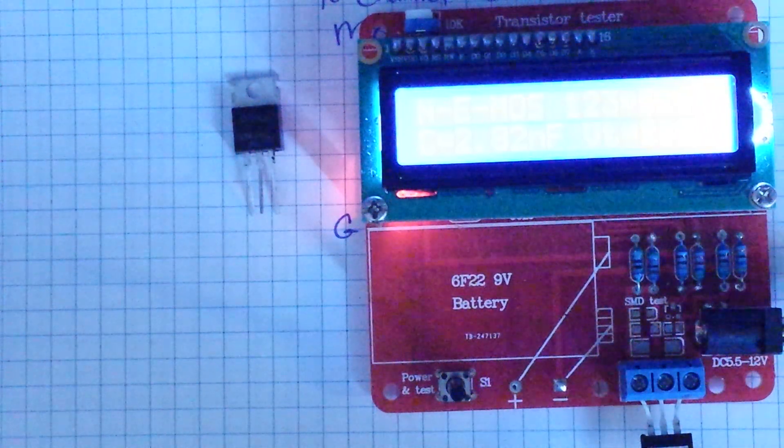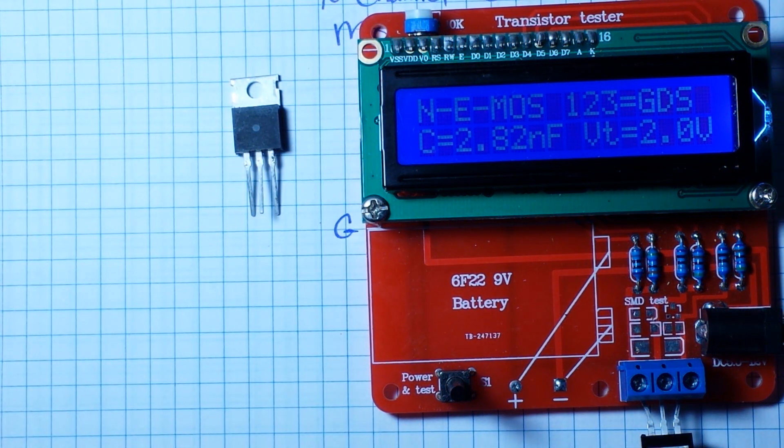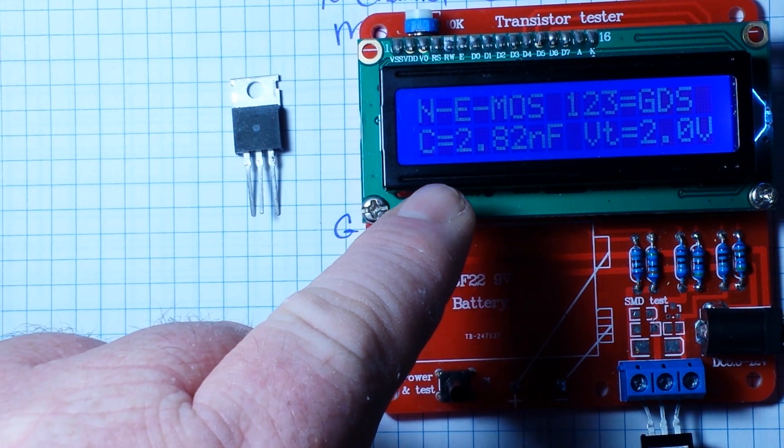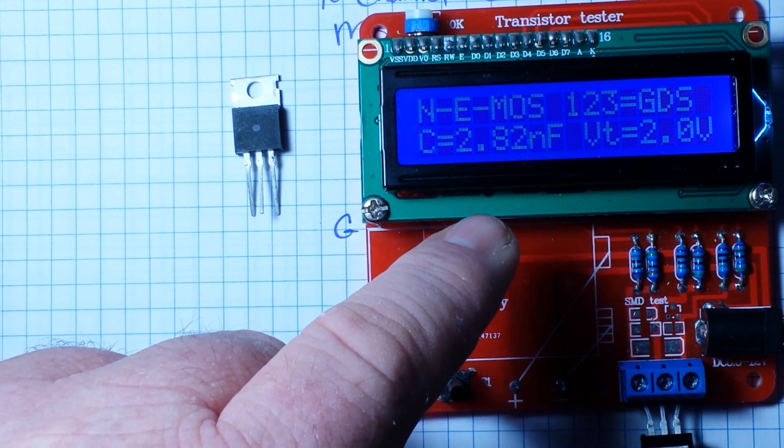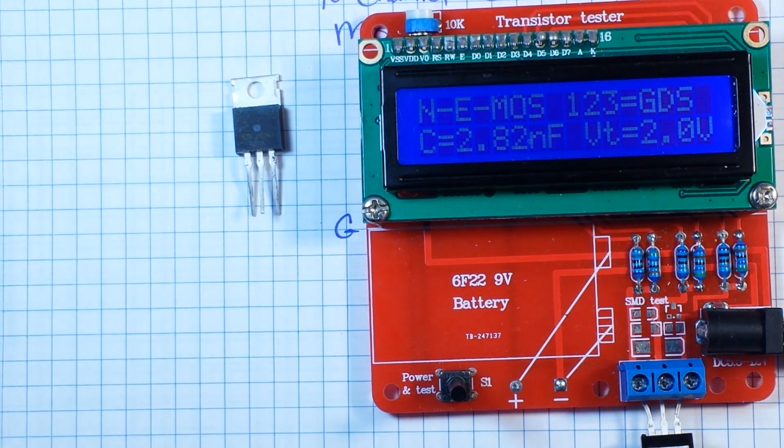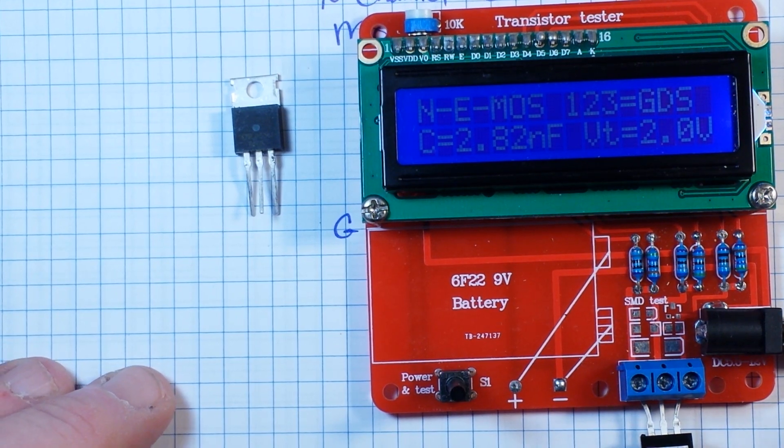So that says n-channel enhancement mode MOSFET, pins one, two, three, gate, drain, source, 2.82 nanofarads capacitance on the gate, two volts threshold. So that's what we've got going on there. But what if you don't have one of these tools and you need to test your MOSFET?